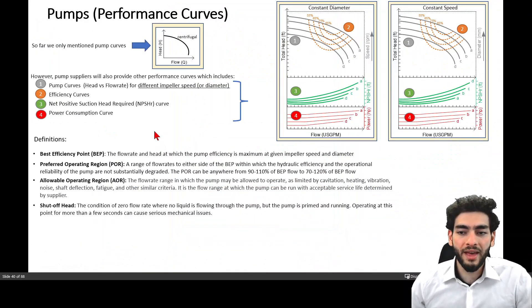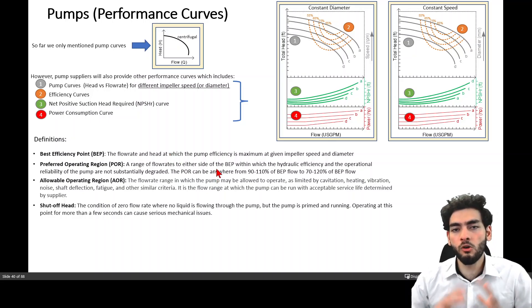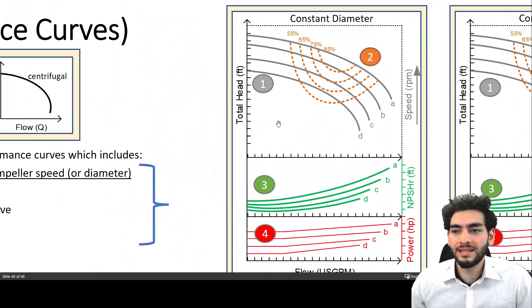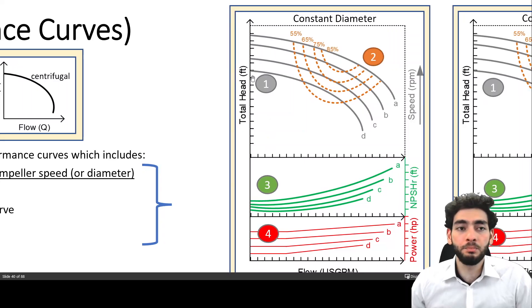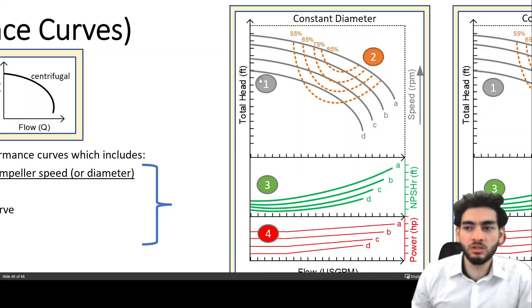The shutoff head is a condition of zero flow rate where no liquid is flowing through the pump but the pump is primed and running and so operating at this point for more than a few seconds can cause serious mechanical issues. So let's imagine that the pump is turned on but there's a valve that's closed at the discharge of the pump.